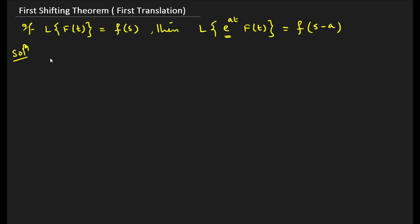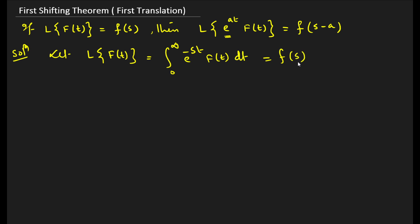Let us prove it. Let the Laplace transform of f(t) equal the integral from 0 to infinity of e^(−st) f(t) dt, which we can write as F(s). You should practice this; initially this integration looks a little uncomfortable, but after writing it two or three times, you'll see it is simple. The limit is always 0 to infinity, and f(t) will change problem to problem, but e^(−st) is fixed.